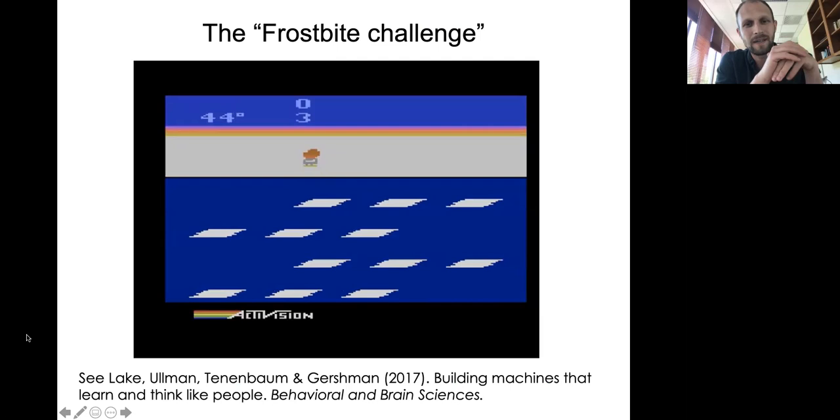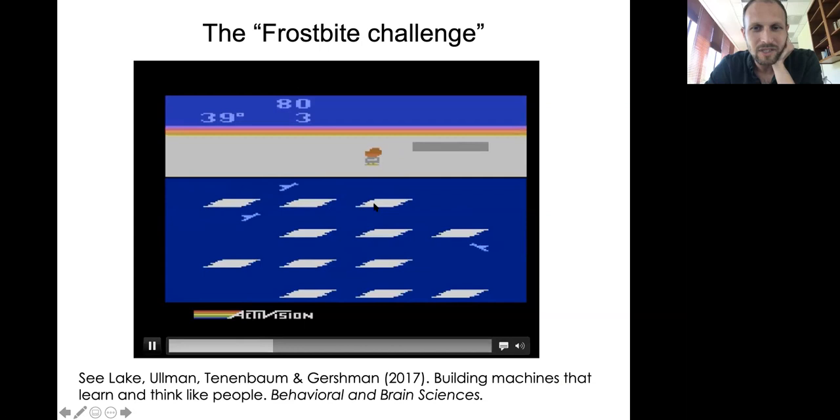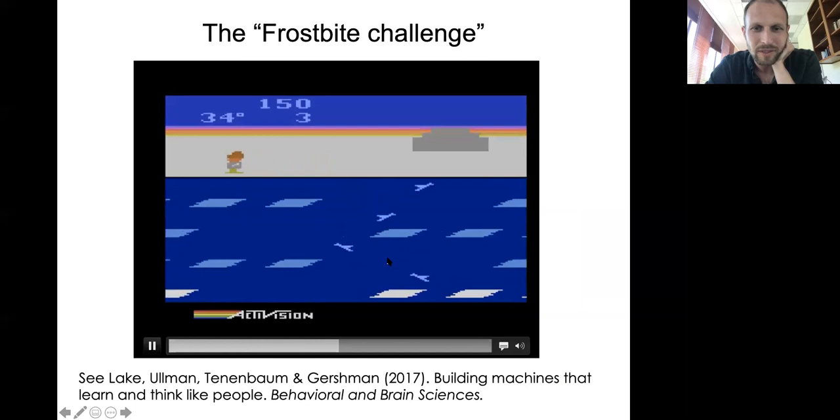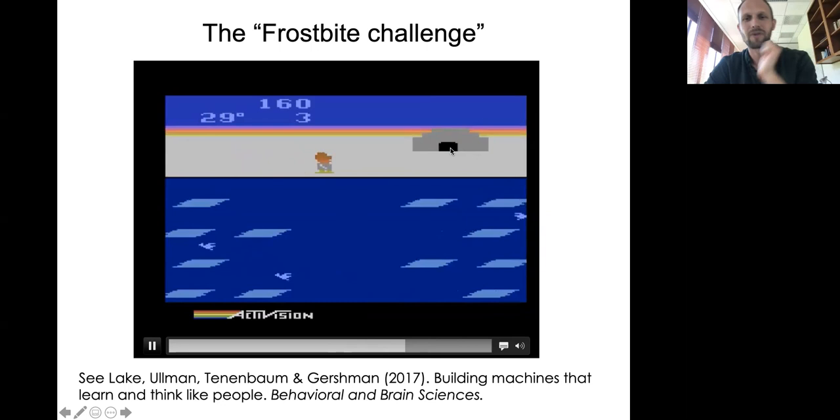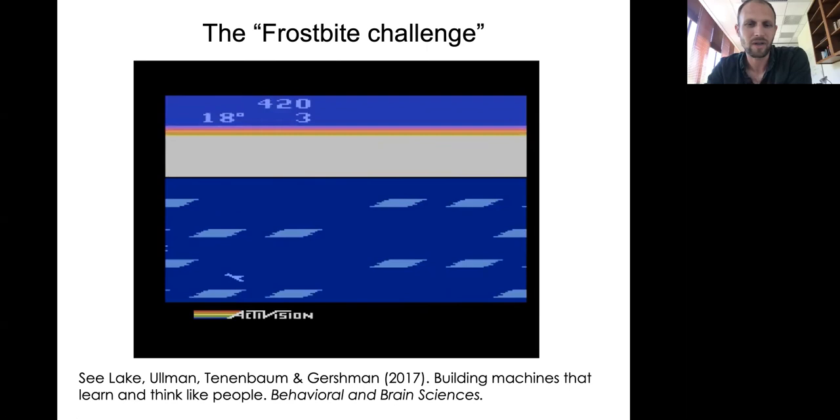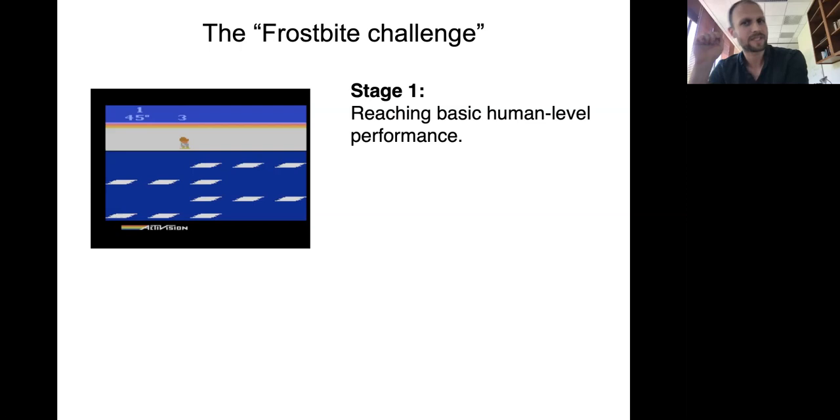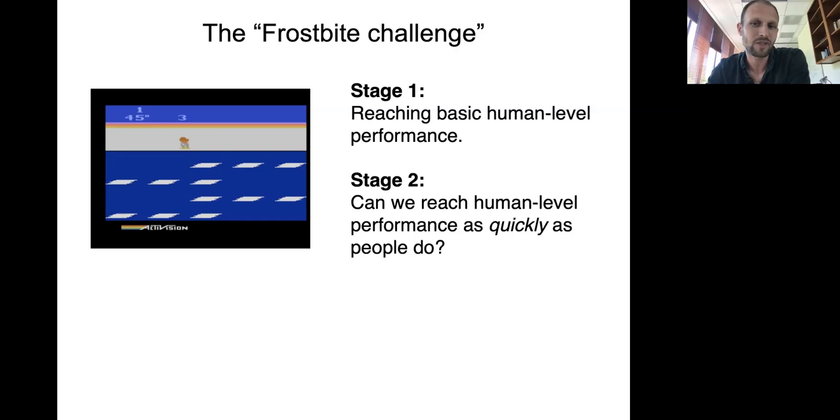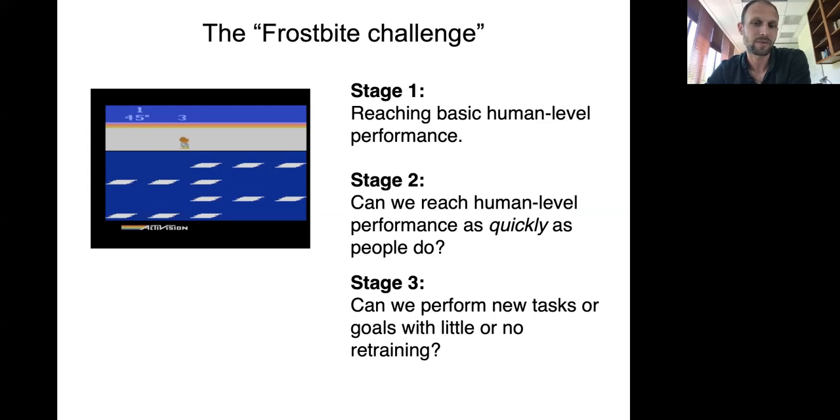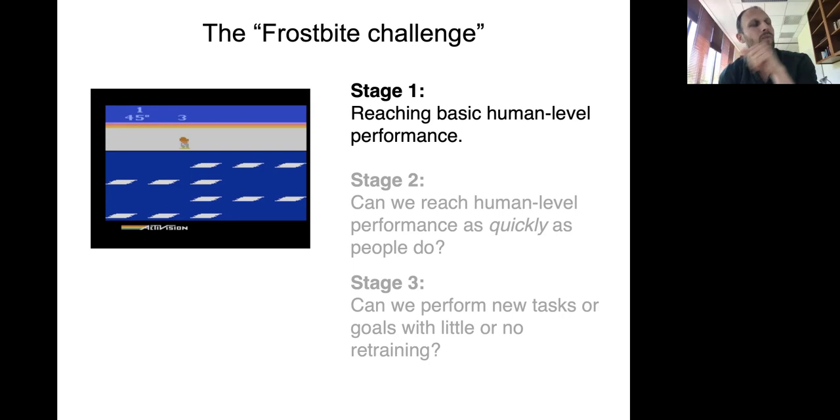Let me just familiarize you for a second with Frostbite, and I'll refer to what we call the Frostbite challenge. Here's Frostbite Bailey, he's jumping on these ice floes to build this igloo, and meanwhile he's trying to avoid these birds. Once he's built the igloo, he can hop back up there and go through the entrance. On later levels, there are other things that come into play, like other kinds of animals. So the Frostbite challenge consists of three stages: reaching basic human level performance, can we reach human level performance as quickly as people do, and can we perform new tasks or goals with little or no retraining?